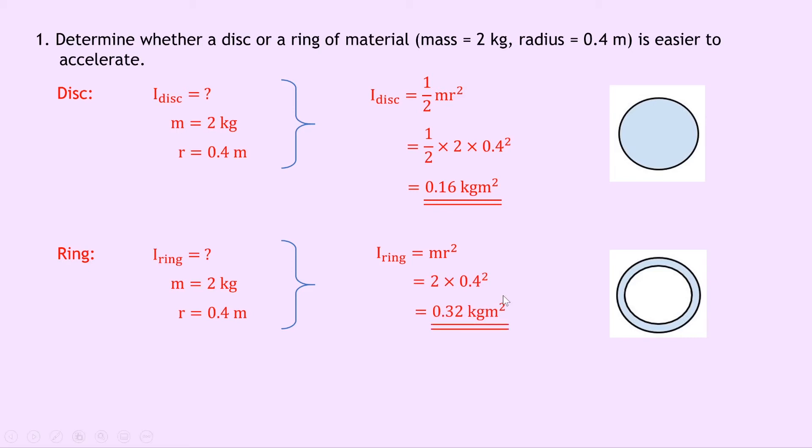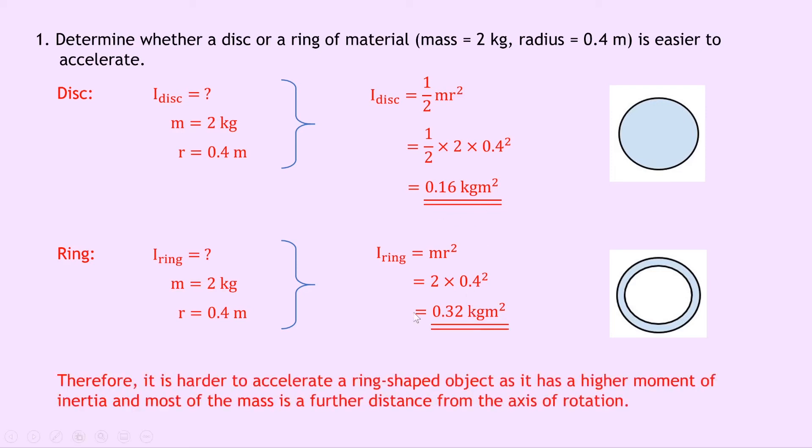So you should be able to see that the moment of inertia for a ring is twice as big as the moment of inertia for a disc. So we can therefore say that it's harder to accelerate a ring shaped object as it has a higher moment of inertia and most of the mass is a further distance from the axis of rotation.